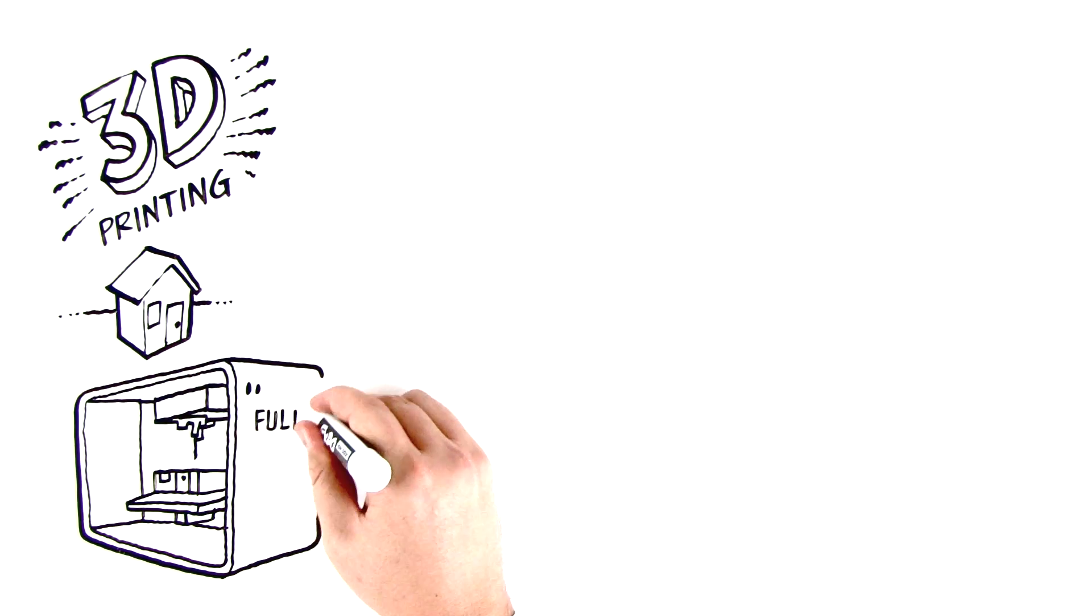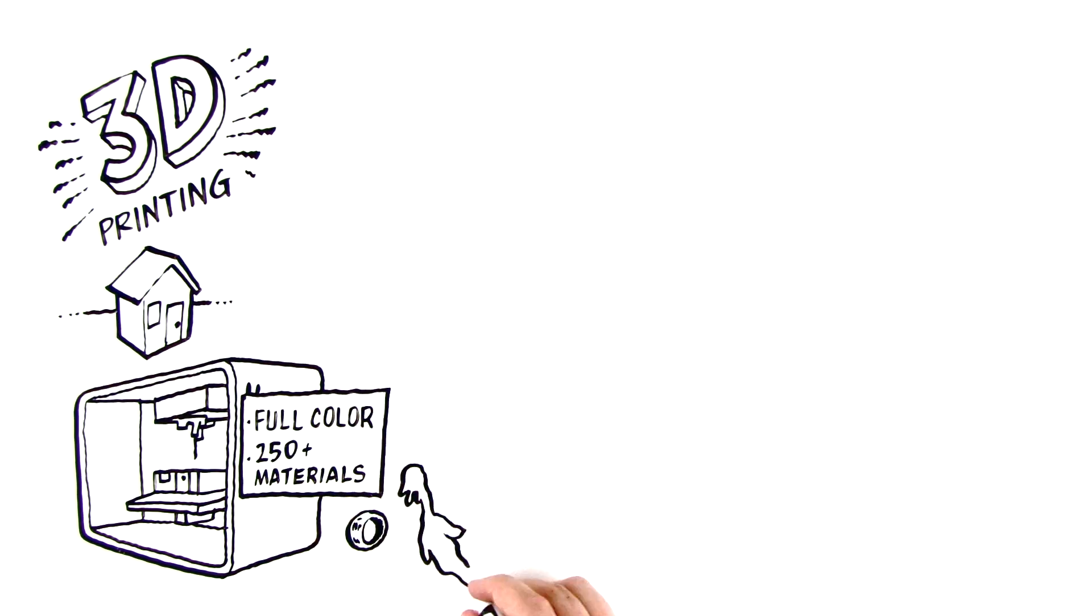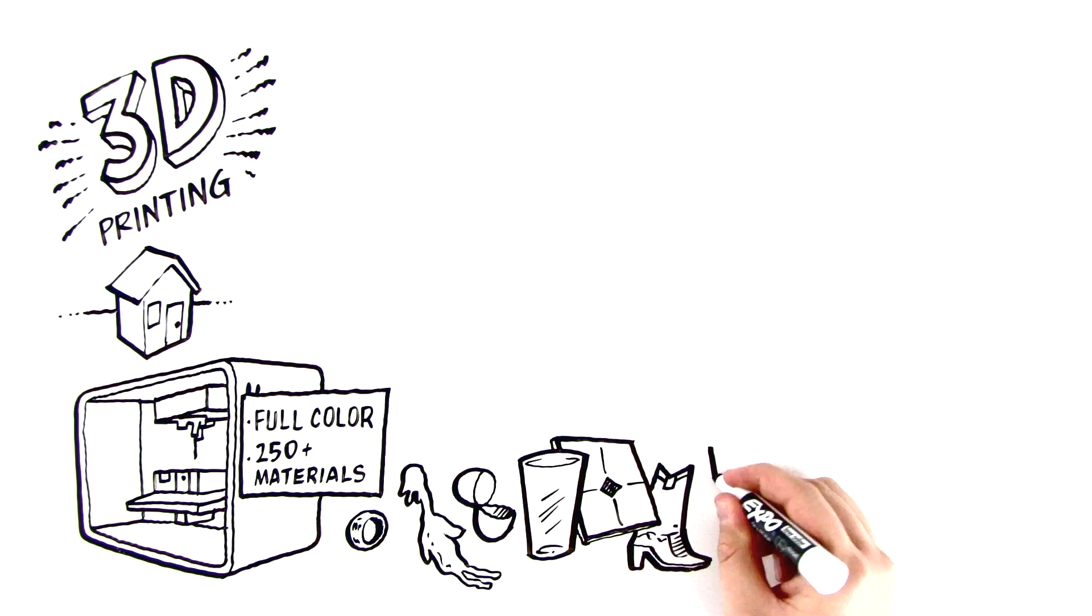Today we can 3D print in full color and in over 250 different materials ranging from titanium to rubber, plastic, glass, ceramic, leathers, and even chocolate.